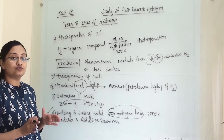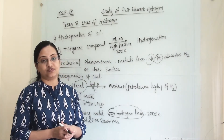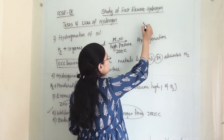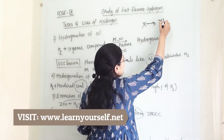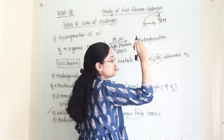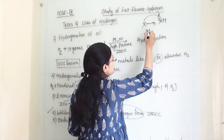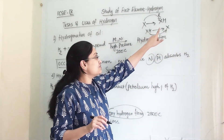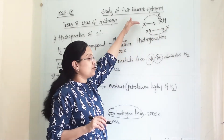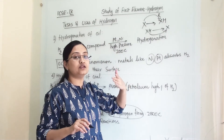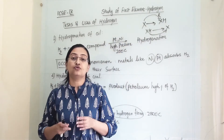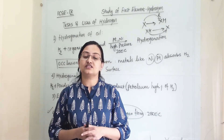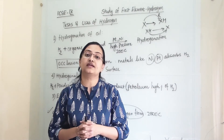Last but not least, we use hydrogen in oxidation and reduction reactions. When hydrogen is attached to any element, that element is being reduced. For example, if X is an element, when it becomes XH, X is being reduced. So in both types of redox reactions — reduction and oxidation — we require hydrogen. For more on oxidation and reduction, a video link is provided in the description explaining how hydrogen and oxygen take part in these reactions.